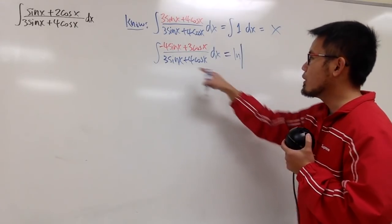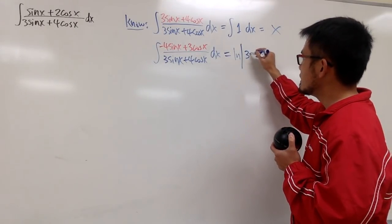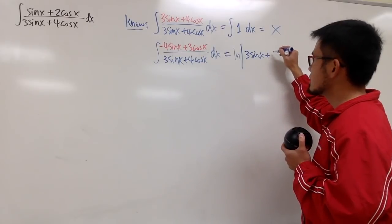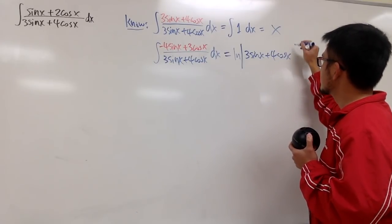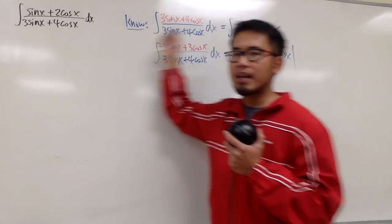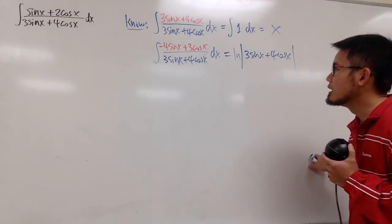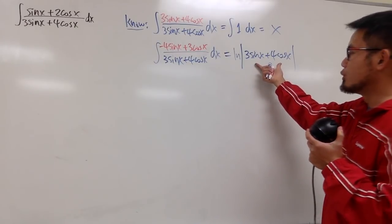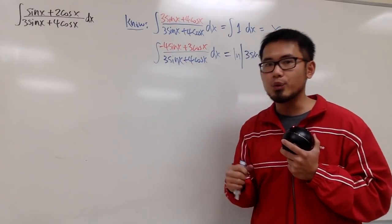Technically, you still take the absolute value of the denominator, 3 sine x plus 4 cosine x, right? And ignore the plus c, because the main deal is this one, not these two. So if you would like to differentiate this real quick, you'll get back to this, so we know we're on the right track.